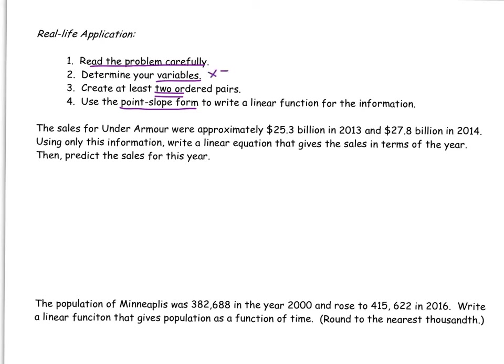Now when we determine our variables, the key things to think about: x is typically a time function, and y can be pretty much whatever else. You could represent cost, you could represent population. Lots of different types of outputs are possible, but x is going to be pretty consistent with time. As we create our two ordered pairs, we should have our x1 and y1, and our x2 and y2. That'll help us create slope and then use our point-slope form.